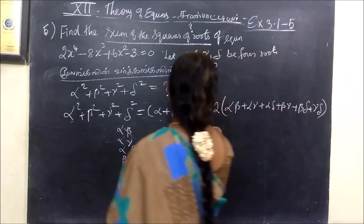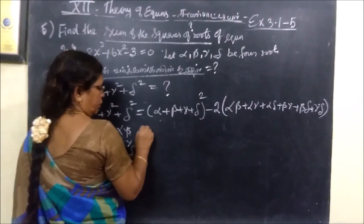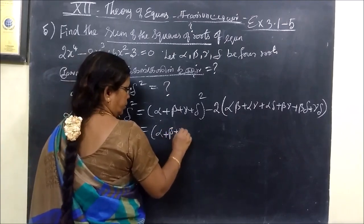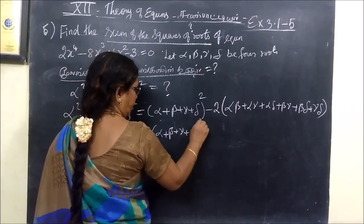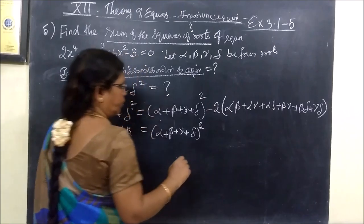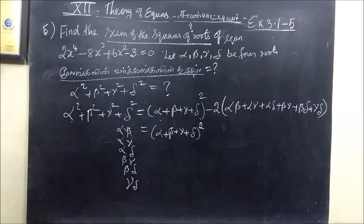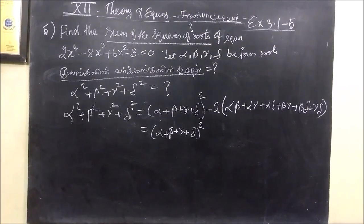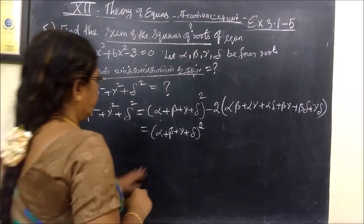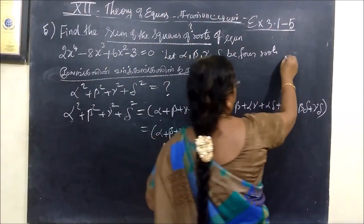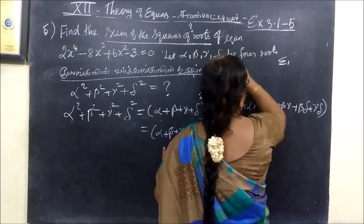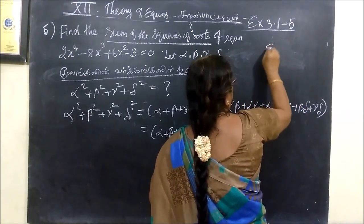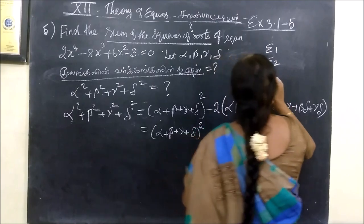Now the value will have Sigma1. This value will substitute here. What can we do here? Sigma1 and Sigma2. Sigma1, Sigma2, 3 and 4.